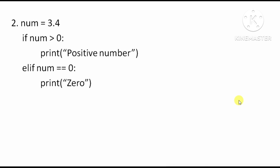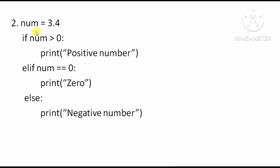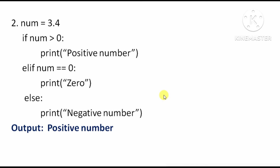The next program: here the variable 'number' has the value 3.4. Since it is greater than 0, 'positive number' will be printed. The other conditions will not be checked.